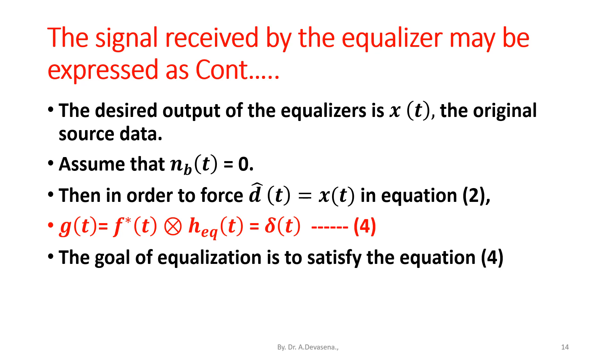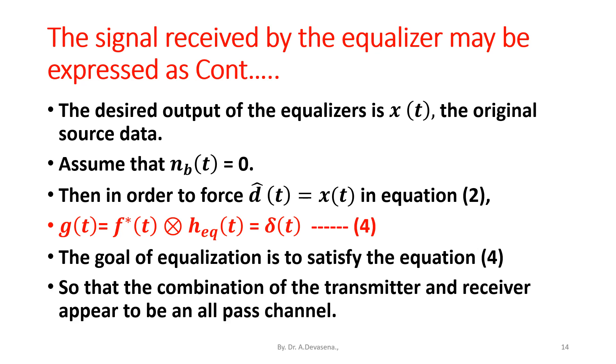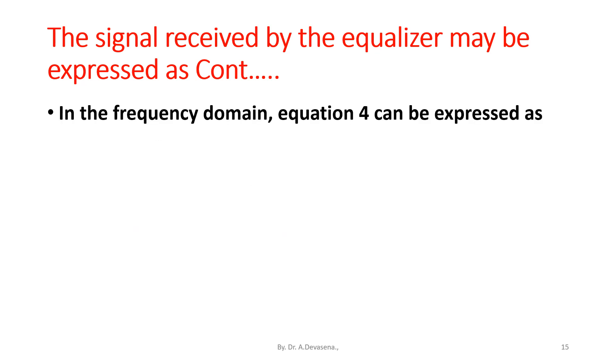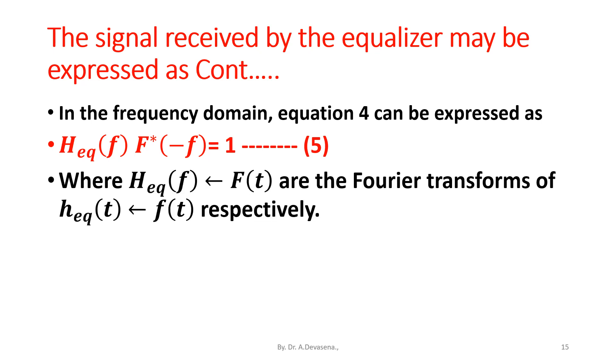The goal of the equalization is to satisfy equation 4 so that the combination of the transmitter and the receiver appear to be an all-pass channel. In the frequency domain, the equation 4 can be expressed as H_eq(F) F*(-F) = 1. Consider this is the equation 5 where H_eq(F) or F(T) are the Fourier transform of h_eq(t) and f(t) respectively.